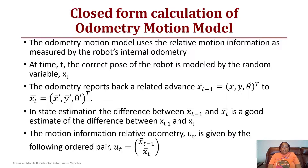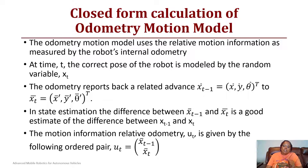The motion relative odometry input is given by u sub t, which is the ordered pair of x-bar t-minus-one and x-bar t. This is the input information we give to the odometry motion model in order to estimate the belief of where the robot is at time t.